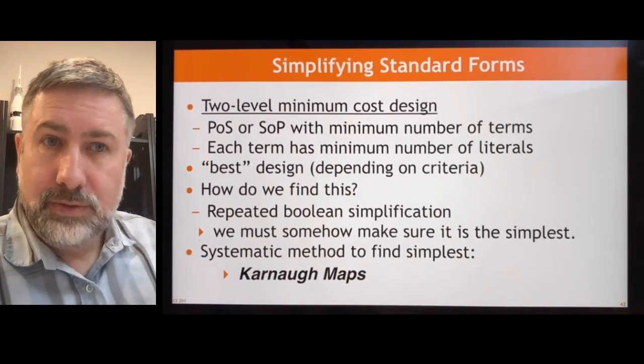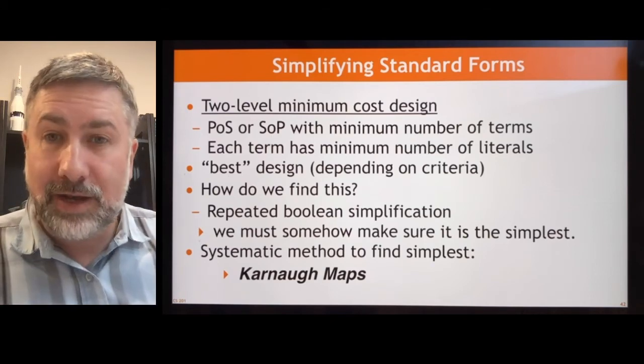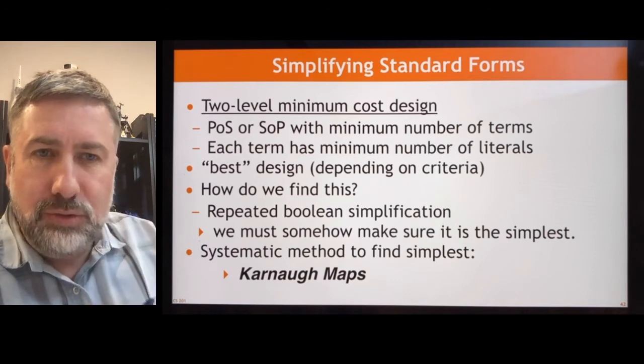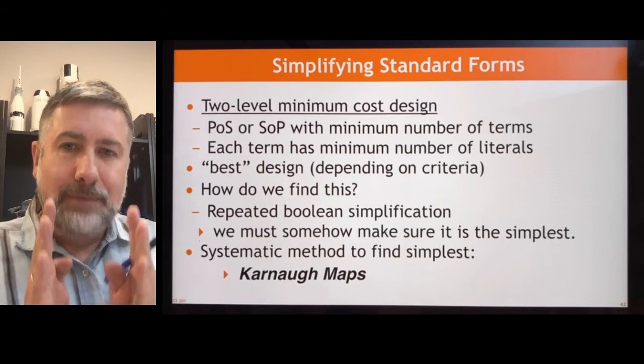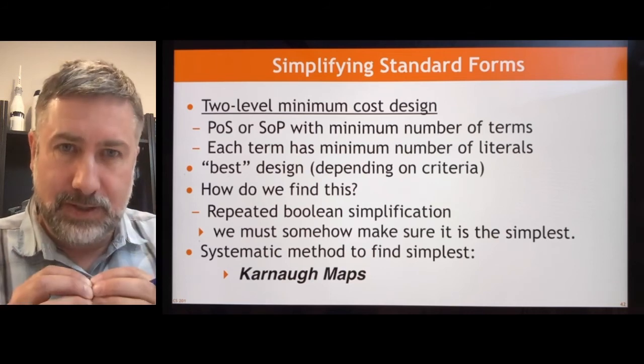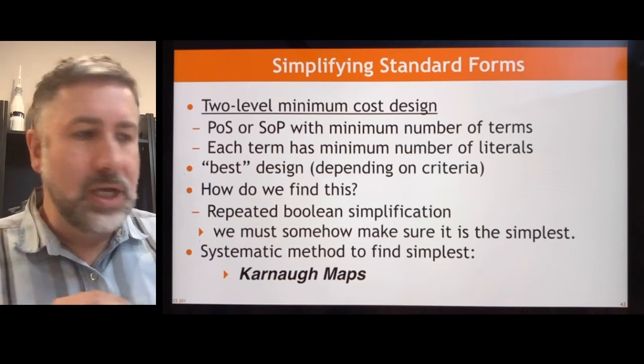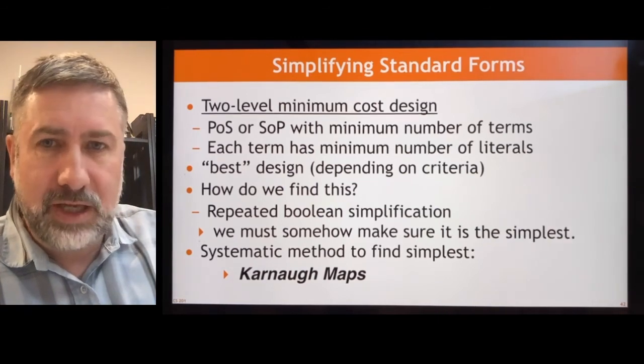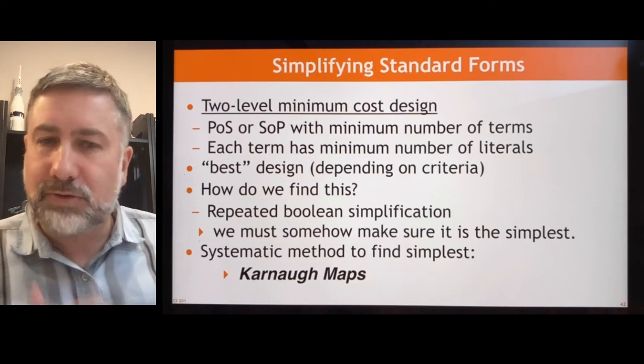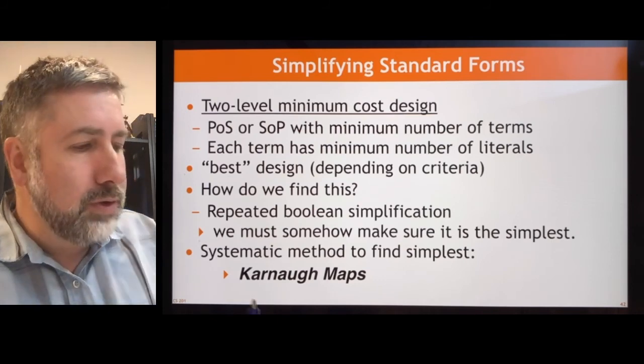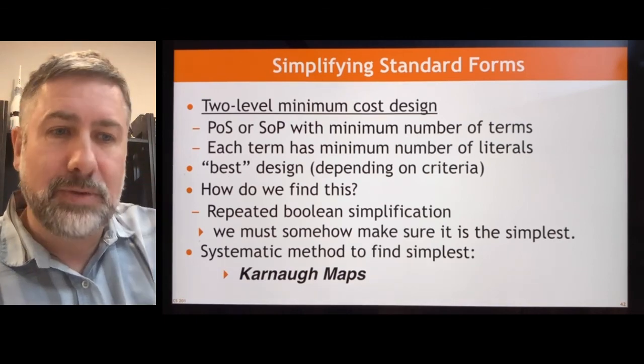Now the reason we do all of these sort of higher level theoretical stuff, which seems like it makes it far more complicated than it might be, is because we're driving at this two-level minimum cost design. Not just that we can get the circuit done in two levels, but it's the simplest two levels that we can generate. How can we guarantee that it's the simplest two levels we can generate? We could use repeated Boolean simplification, but as we saw in some of our examples, it can be tricky to sort of convince ourselves that we've got the simplest representation. So instead we're going to build out a systematic method called Karnaugh Maps. And this is what the next set of videos is going to be all about.